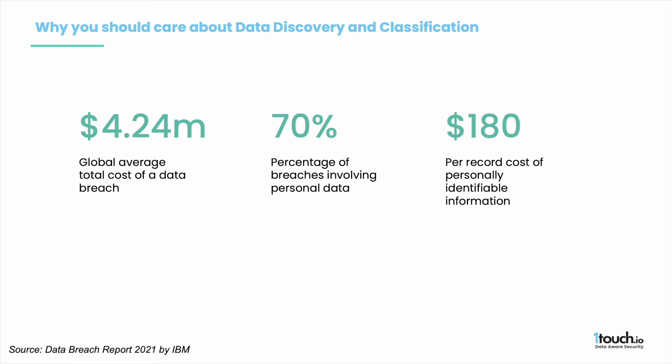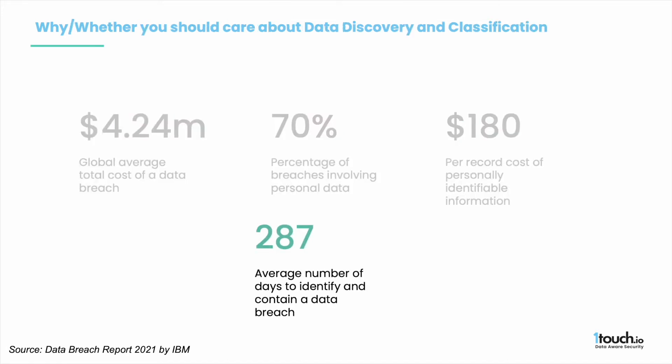It was also the costliest record type at 180 dollars per lost or stolen record. One more figure which might surprise you: it took an average of 287 days to identify and contain a data breach. To put this in perspective, if a breach occurs on January 1st, it won't be contained until October 14th. Failing to protect data can cost a lot of money.